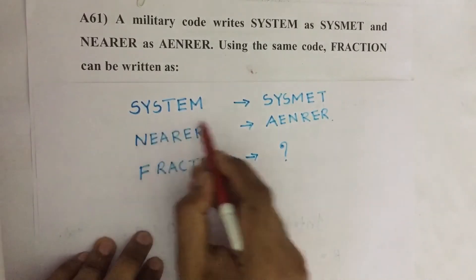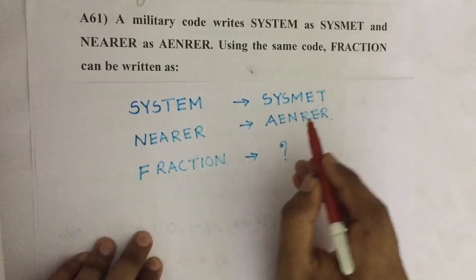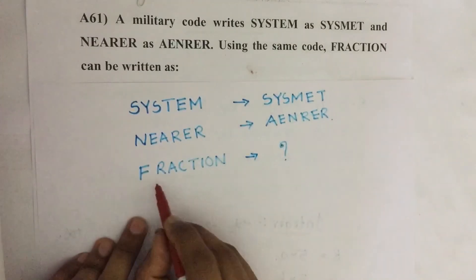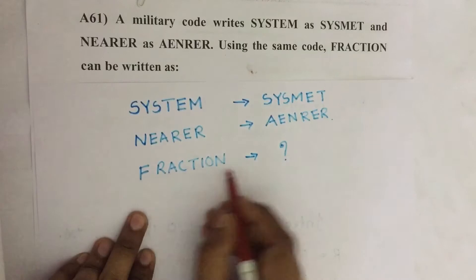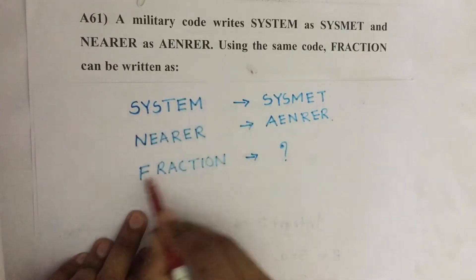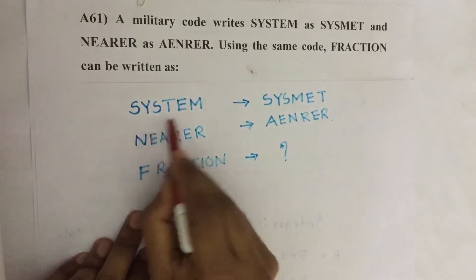So SYSTEM is written as SYSMET, NEARER is written as AENRER, then what is the code for FRACTION? Here we can see all these words have even number of letters.